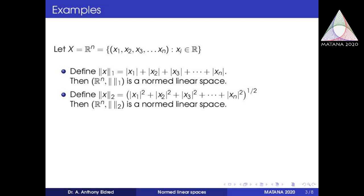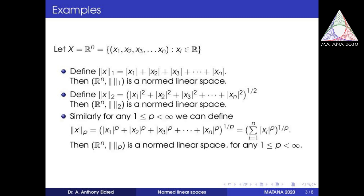We can extend this definition for any p with 1 less than or equal to p less than infinity, where we define the p-norm of x as the p-th root of modulus of x1 to the power p plus modulus of x2 to the power p, up to modulus of xn to the power p — that is, the p-th root of summation i equal to 1 to n of modulus of xi to the power p. R^n with the p-norm is a normed linear space, which can be verified using Minkowski's inequality or Hölder's inequality for the triangle inequality.